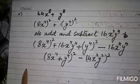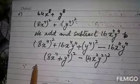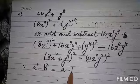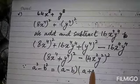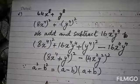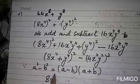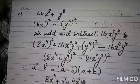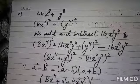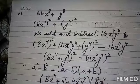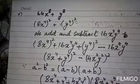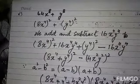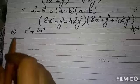We apply the difference of squares formula: a² - b² = (a - b)(a + b). So the expression becomes (8x⁴ + y⁴ - 4x²y²)(8x⁴ + y⁴ + 4x²y²). This is your final answer for the fifth part.